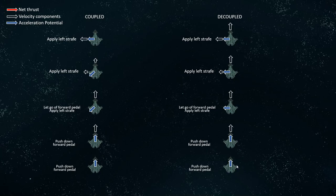In decoupled mode, we begin the same way — we push down our forward pedal, which tells our main thrusters to fire. After some time, continuing to push down the forward pedal, we are increasing our forward velocity and continuing to accelerate forward. Now, the moment that we let go of the forward pedal and apply left strafe, you can see that this acceleration vector is directed purely leftwards. Because in decoupled mode, IFCS will not automatically cancel our motion in the previous direction.